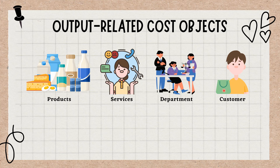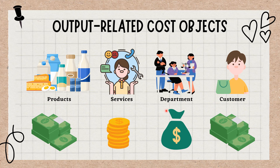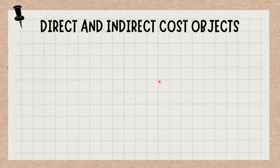By assigning costs to specific cost objects, businesses can identify and analyze expenses associated with different activities and make informed decisions about pricing, budgeting, and resource allocation. Cost objects can be divided into two main categories, direct and indirect.